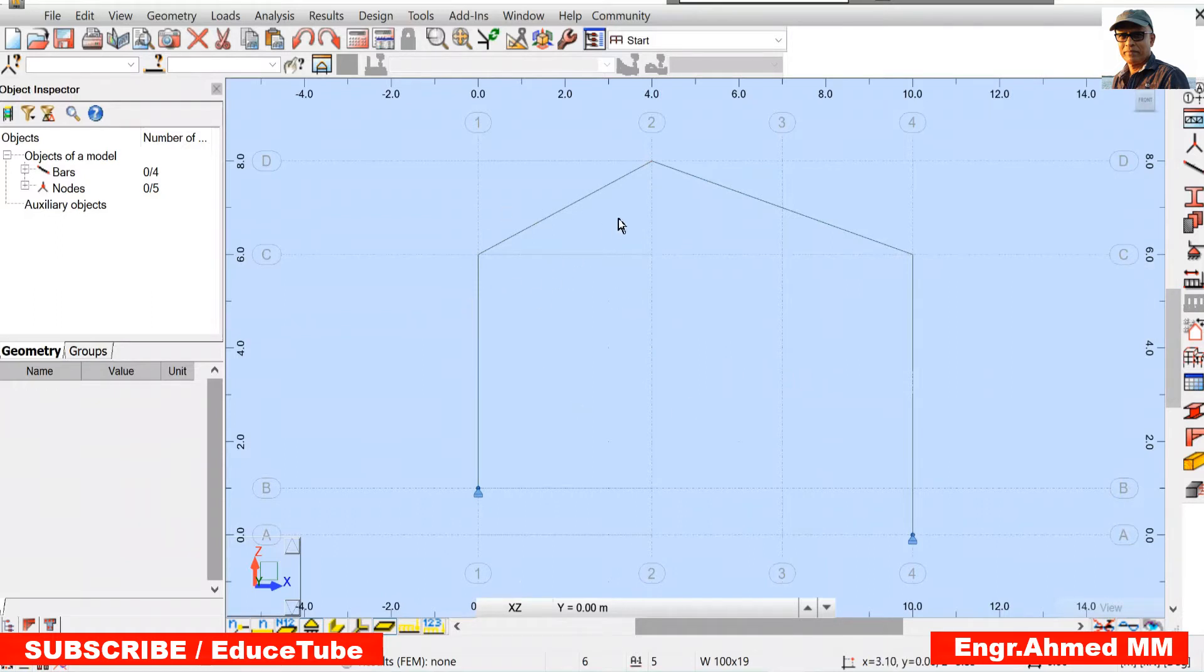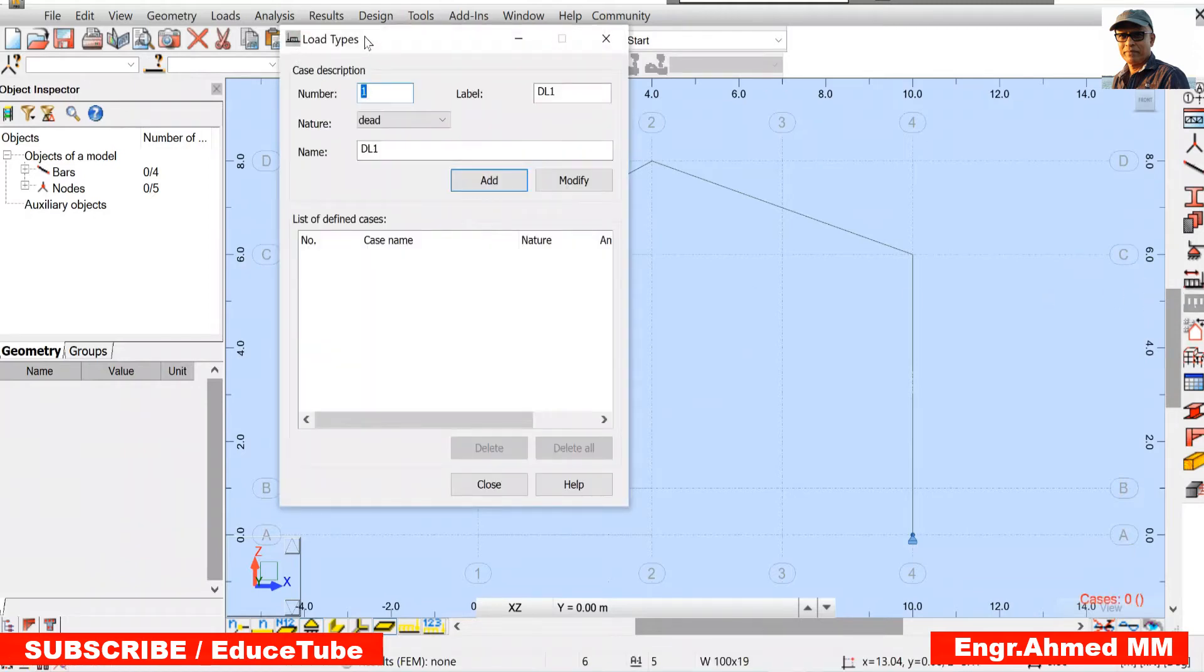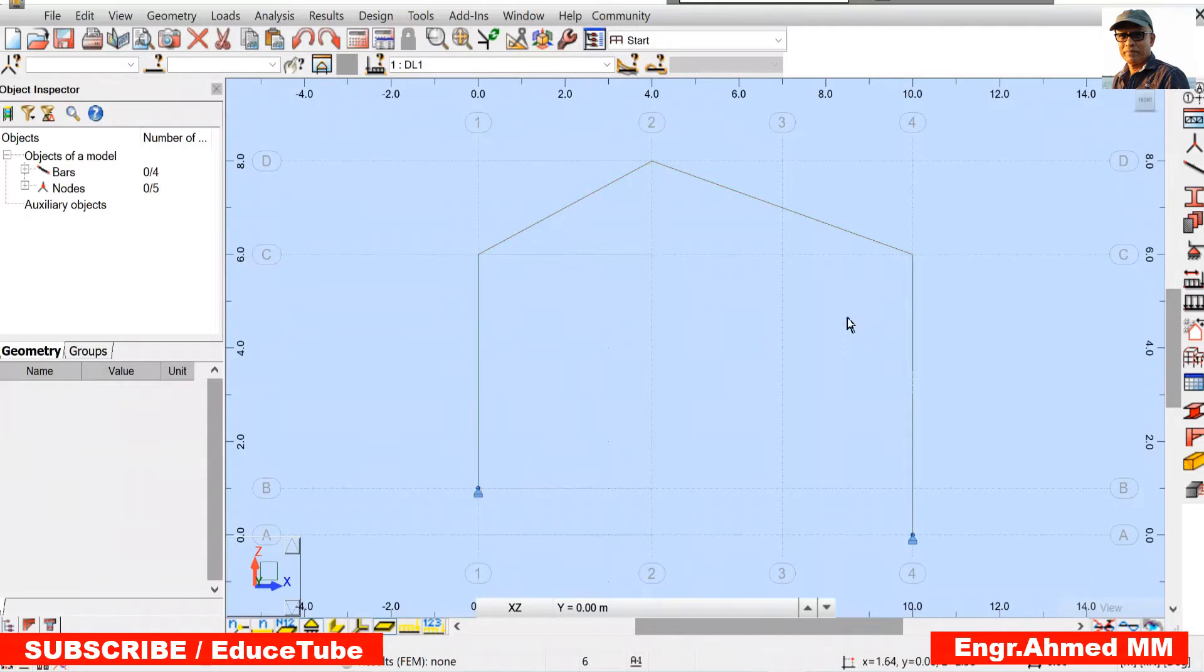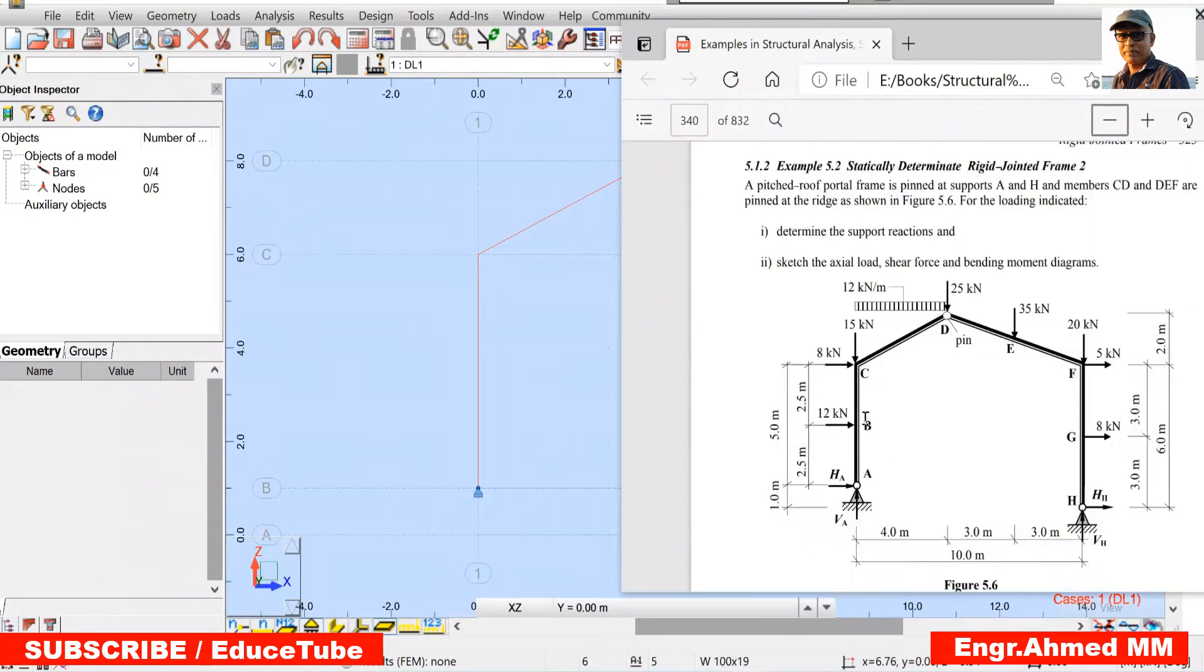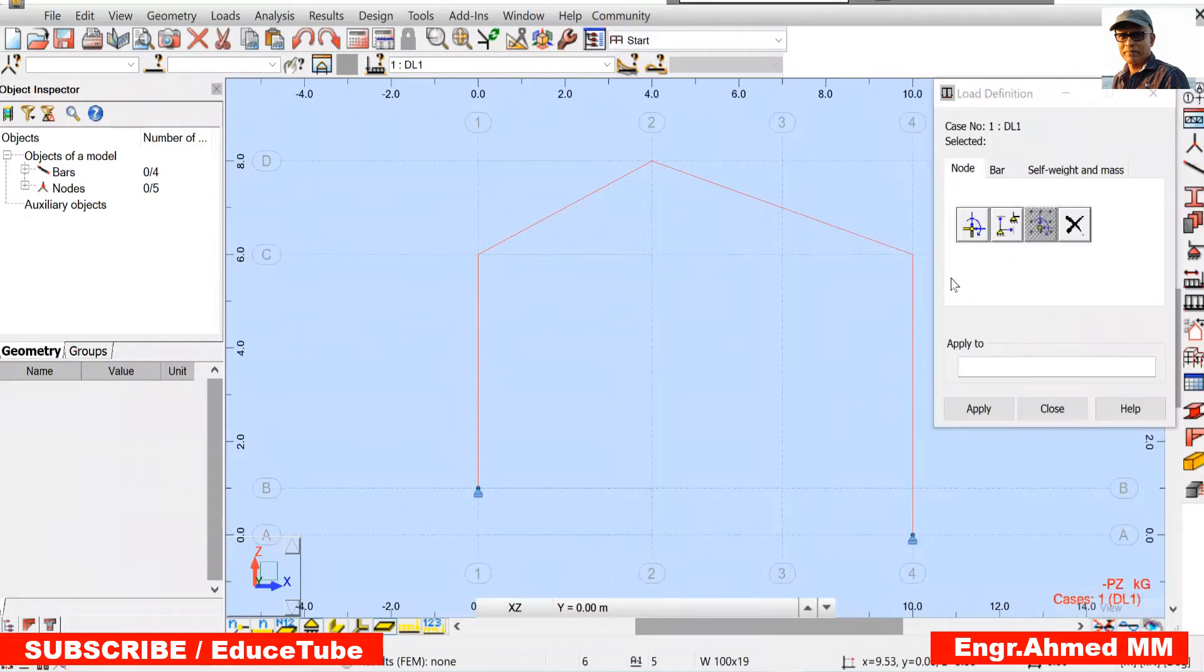Now we have to apply the loads. So let's select load types, say dead load. Selection is done. Now go for putting the loads. First we will put the loads on bars. What is that? This bar, this bar, this bar. Horizontal force we will provide first. So 12 and 8 are on the bars, but 8 and 5 are on the nodes.